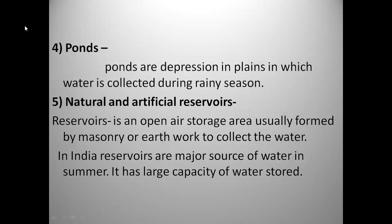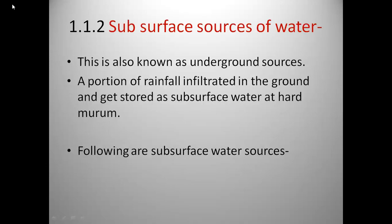The fourth surface source is ponds. Ponds are depressions in plains in which water is collected during the rainy season. The fifth surface source is natural and artificial reservoirs. A reservoir is an open-air storage area usually formed by masonry or earthwork to collect water. In India, reservoirs are a major source of water in summer — water is stored in reservoirs and used in summer, and they have a large water storage capacity.